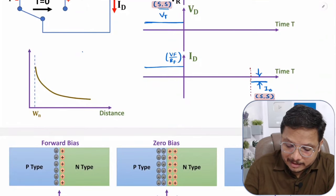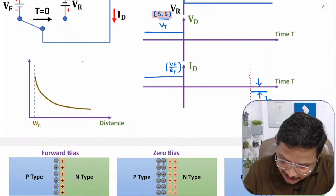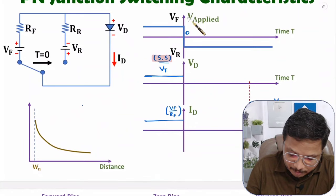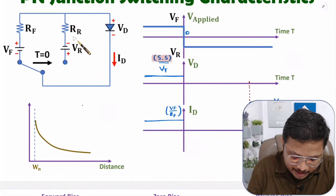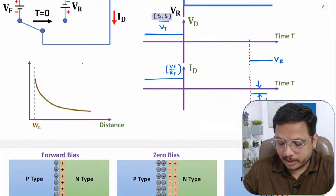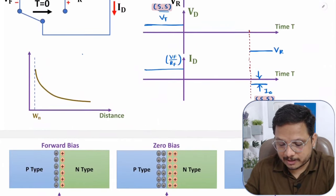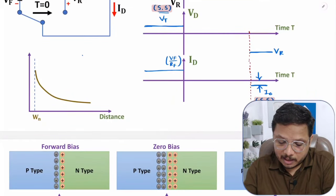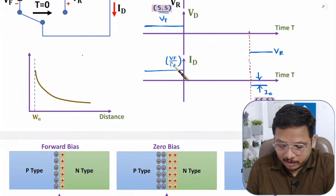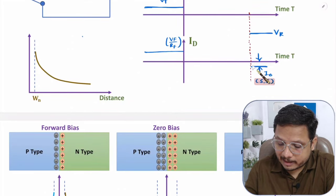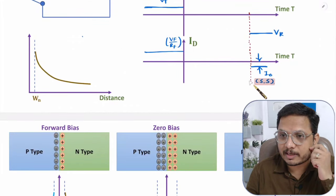In reverse bias steady state, the voltage across the diode will be VR, the applied reverse bias voltage. So to summarize: in forward steady state, voltage is VT and current is VF over RF. In reverse bias steady state, voltage is VR and current is I0, which is negligible and due to minority carriers.